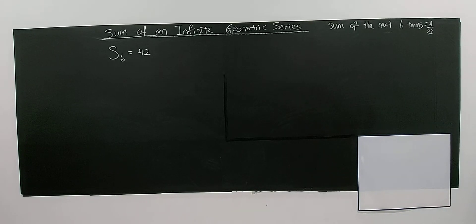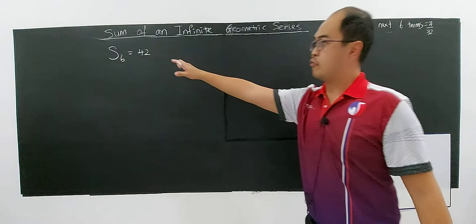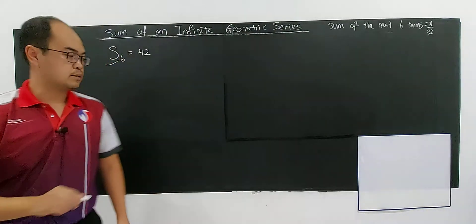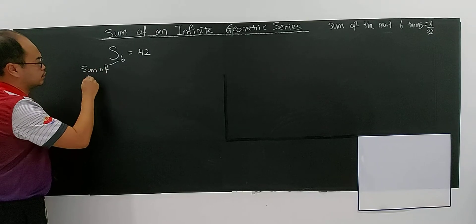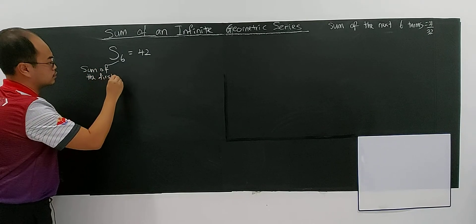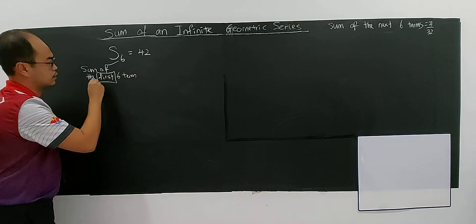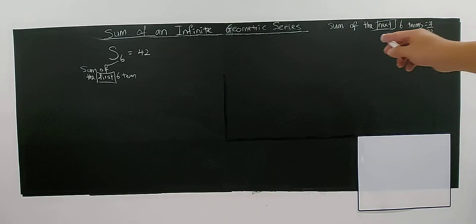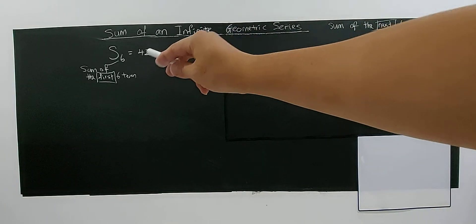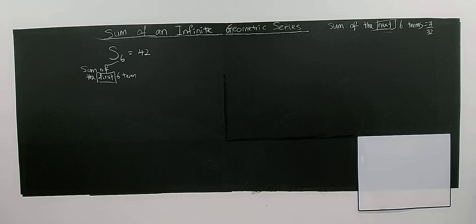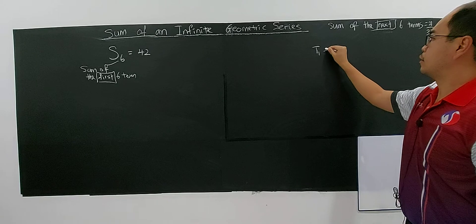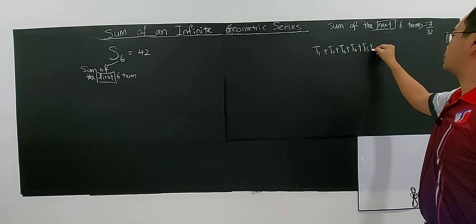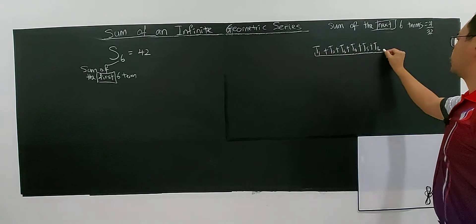What is the meaning of 'sum of the next six terms'? The sum of the first six terms — S6 — means T1 plus T2, T3, T4, T5, T6. This is your S6. But if they say 'sum of the next six terms', it means after the six terms, which is T7, T8, T9, T10, T11, and T12.